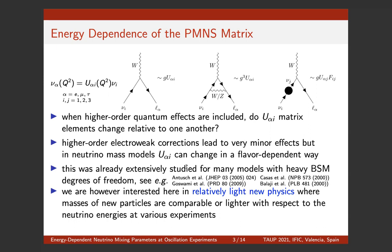I'm listing here a couple of papers where the authors were typically considering the running between the GUT scale and the electroweak scale. Our strategy here is somewhat complementary, because we are interested in relatively light new physics where the masses of new particles are comparable to the actual energies at neutrino experiments — we are seeking to explore the impact of RG evolution at neutrino experiments.